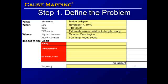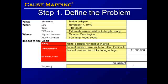We then capture the impact on goals resulting from the incident. While there were no injuries, the safety goal is impacted because of the potential for serious injuries. The transportation goal is affected because of the loss of a primary travel route to the Kitsap Peninsula, and the loss of revenue from tolls during the outage, estimated to be $1.6 million. The materials and labor goal is impacted because of the complete loss of the bridge, valued at $6 million.